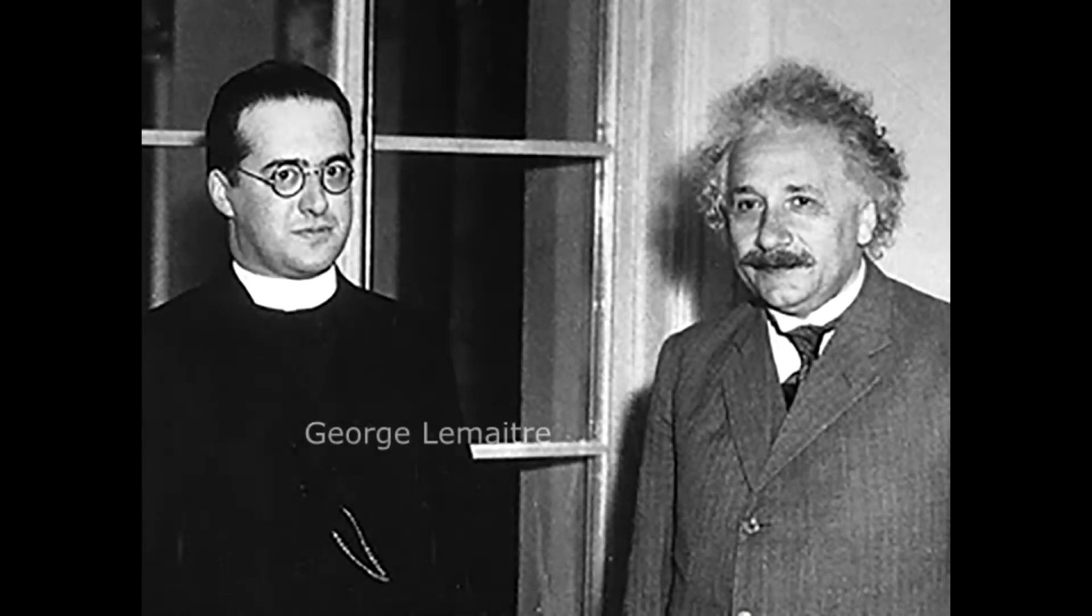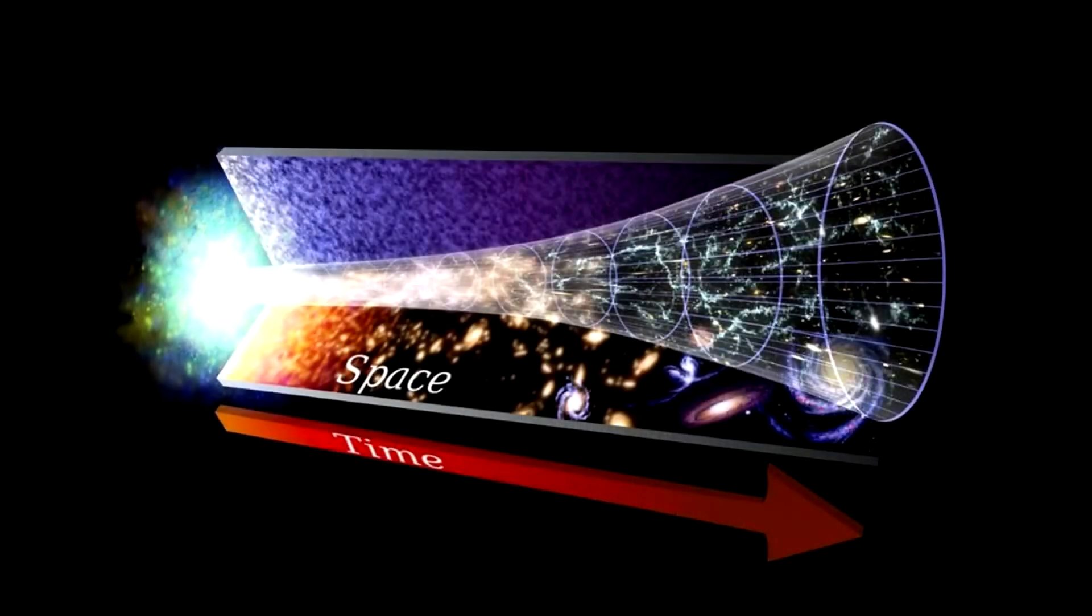In 1927, the Belgian Catholic priest, Georges Lemaître, proposed an expanding model for the universe to explain the observed redshift of spiral nebulae and calculated the Hubble law.